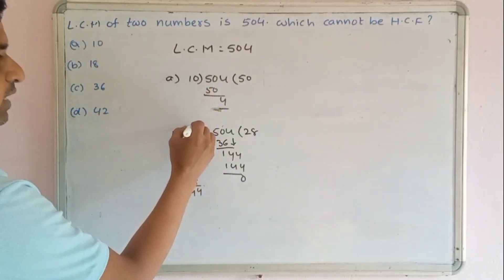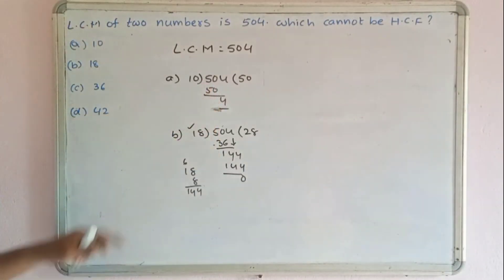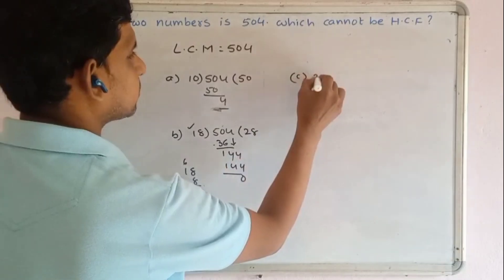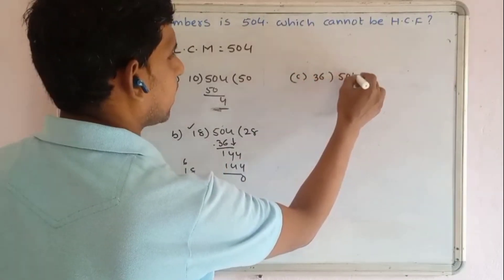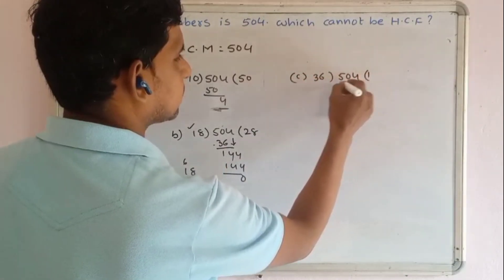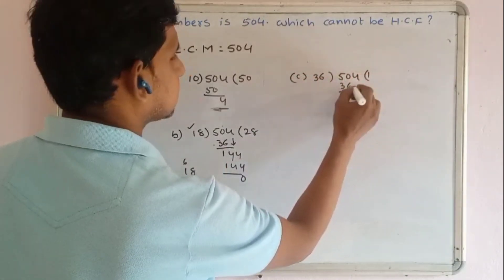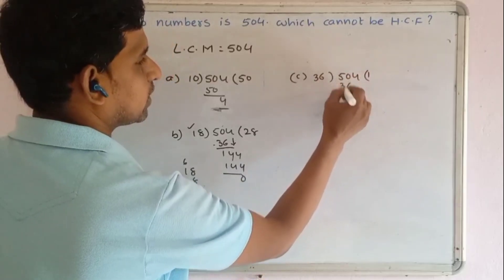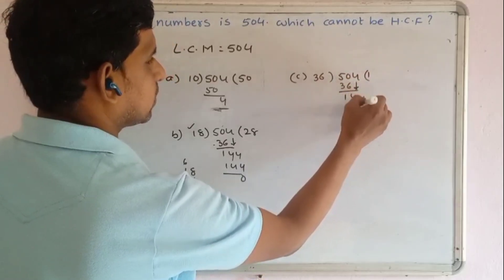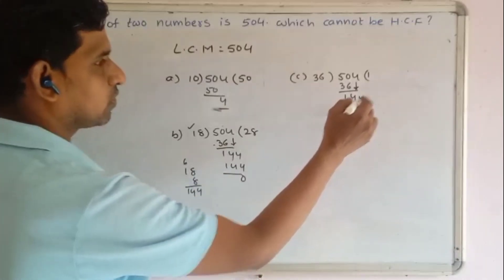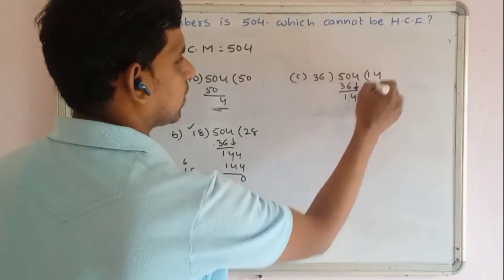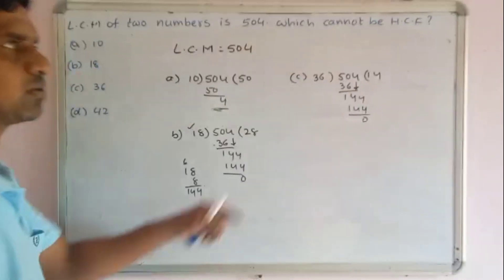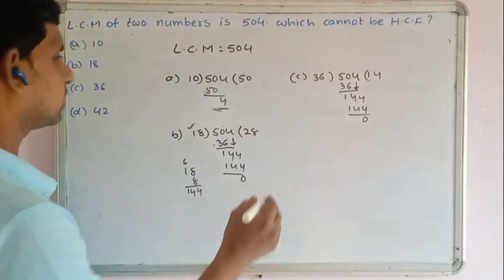Checking option C: 36. 504 divided by 36 gives 14 with remainder 0. So 36 is also exactly divisible — 36 can also be a chance as HCF.